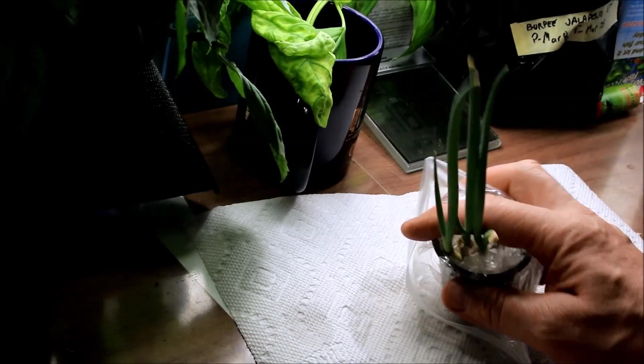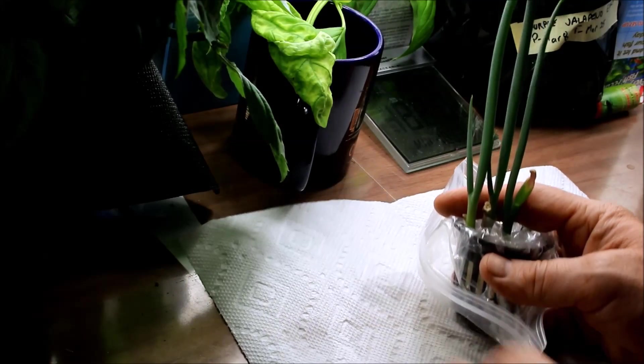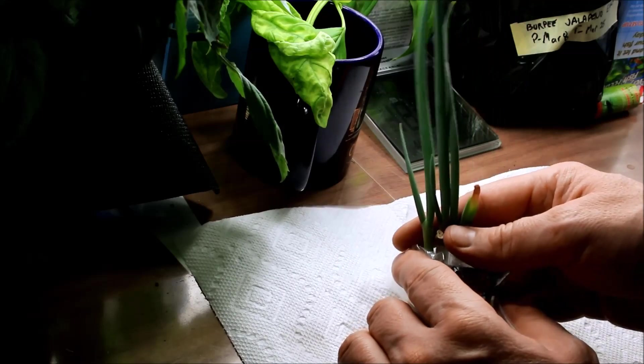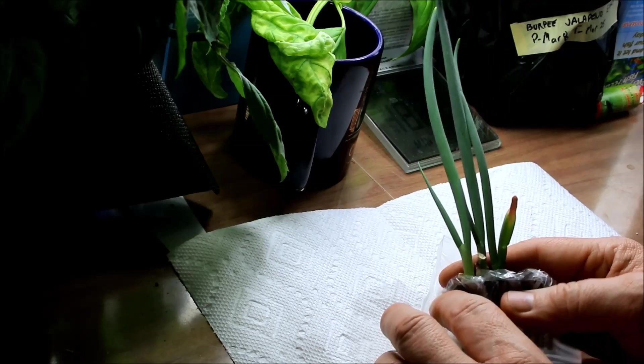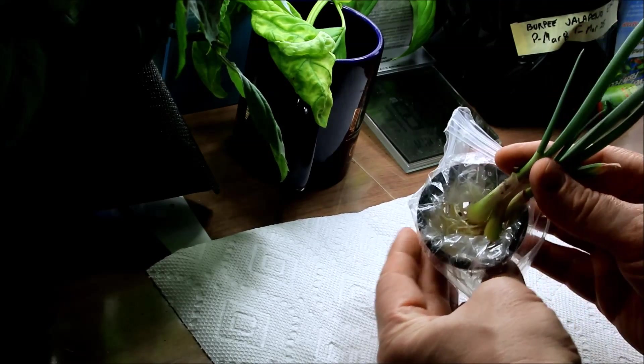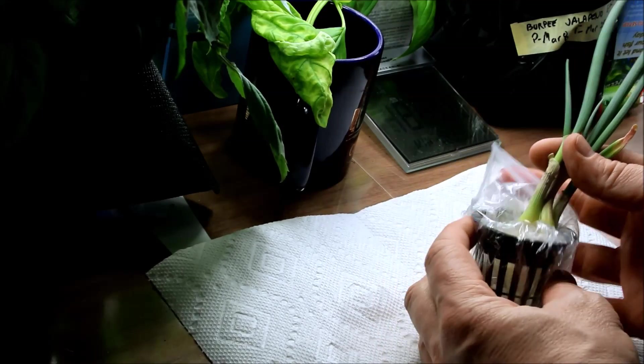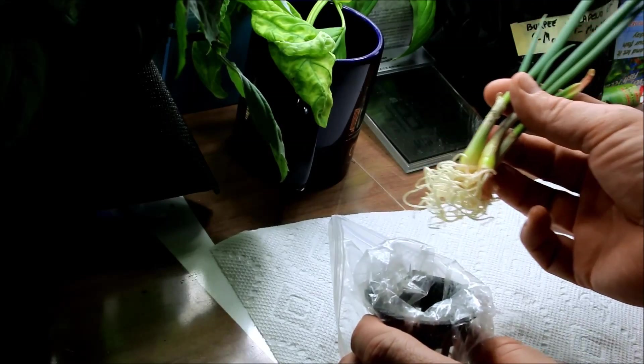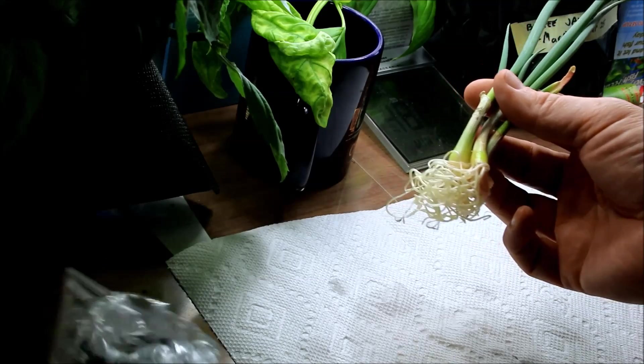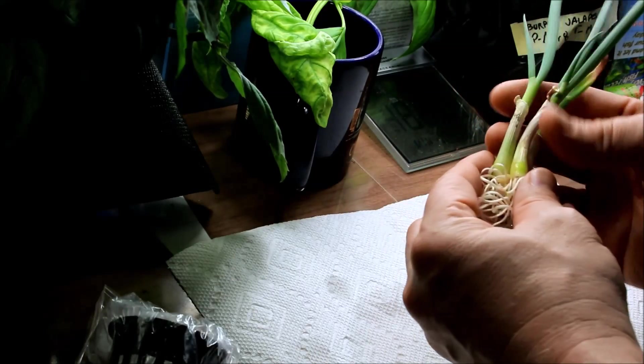If you remember from my update a couple weeks ago I had done some green onions. And as you can see these have really taken off and they're doing well still just sitting in this ziplock bag with a little bit of water. Take a look at the root structure. So I'm going to take this and place this into my cloner as well.